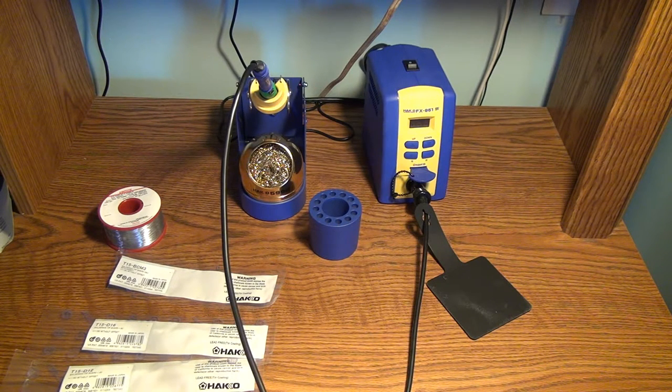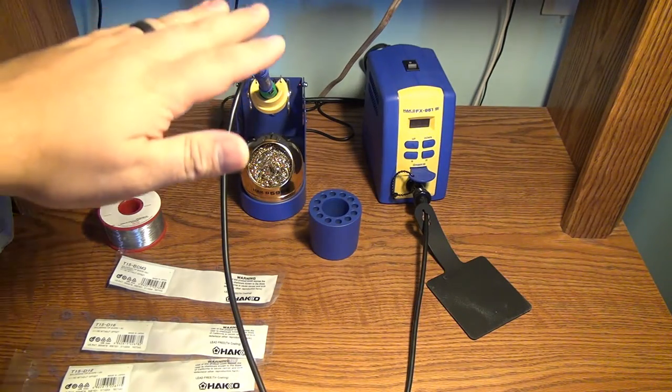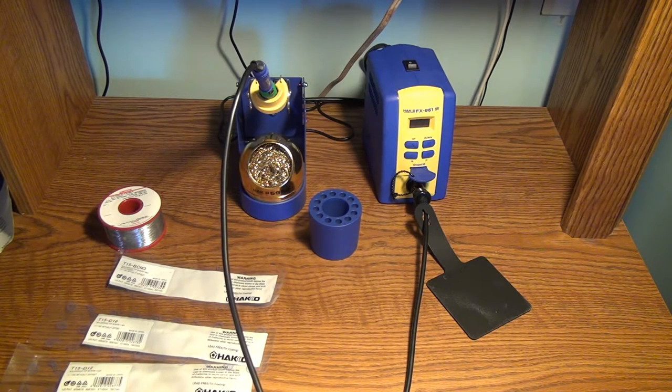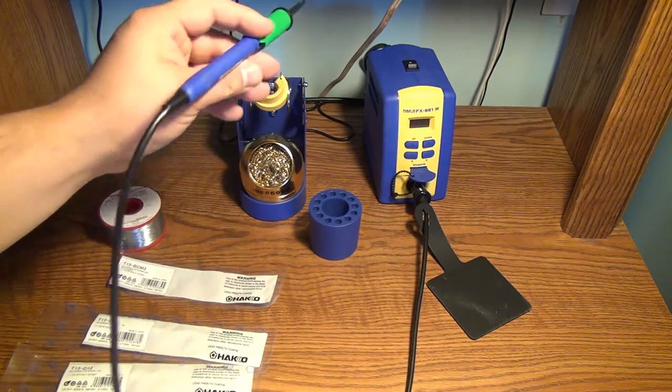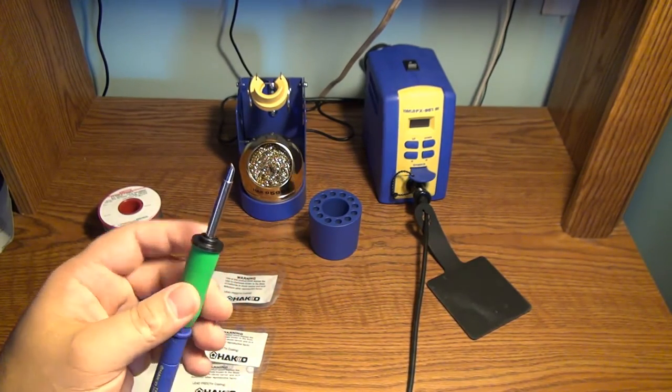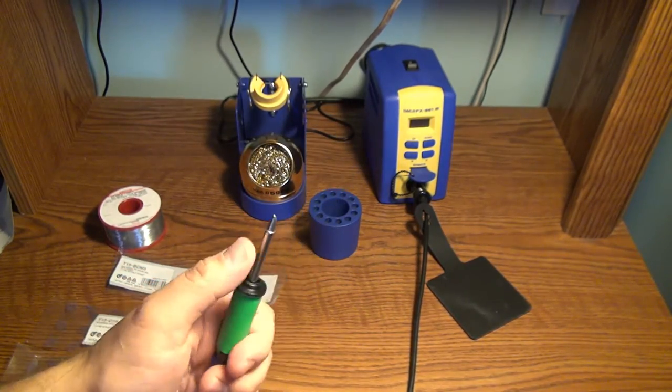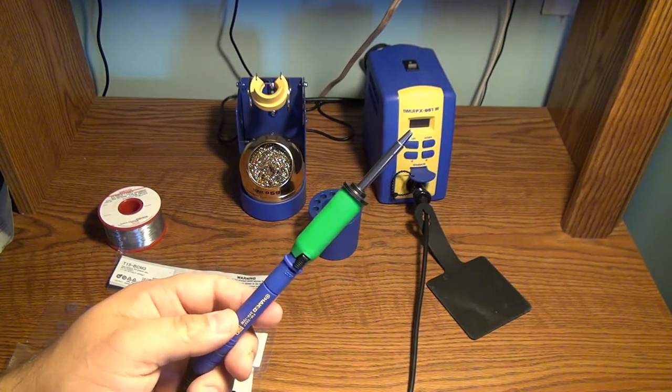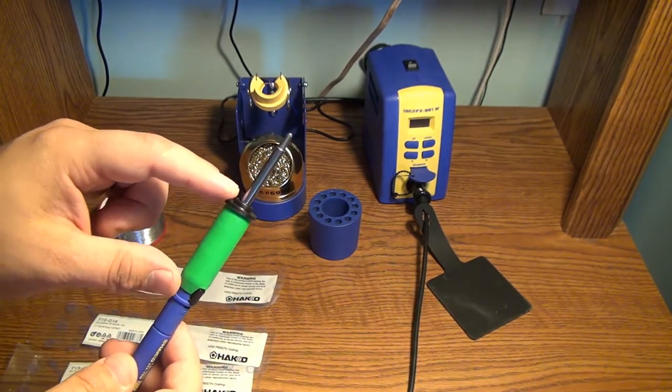So this is the station in question, this is the FX-951. This station fulfills all of the needs and requirements that I had talked about previously. So let's go through them. The first thing is that the tips on this are hot swappable. It's not on so I can touch the tip. The tips are electronic cartridges just like the JBC.